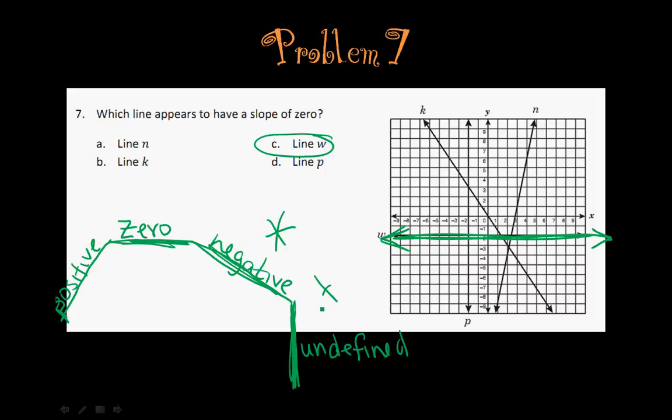So this is definitely something you want to have memorized for TAKS, because they love to throw these types of problems out there. It's a really easy problem if you just know this diagram - that it's positive when it's going up, 0 when it's flat, negative when it's down, and undefined if it's straight up and down.